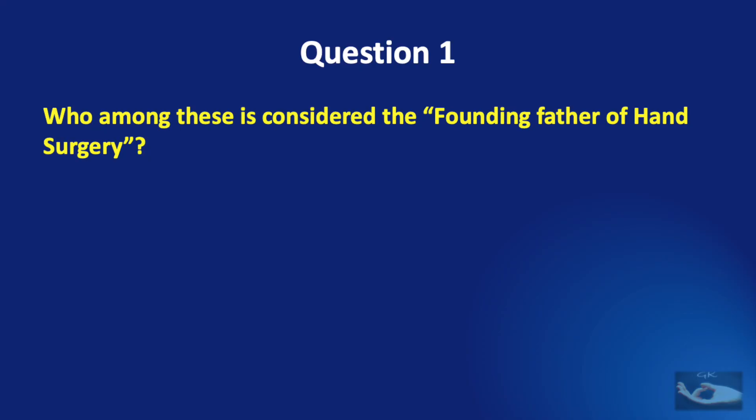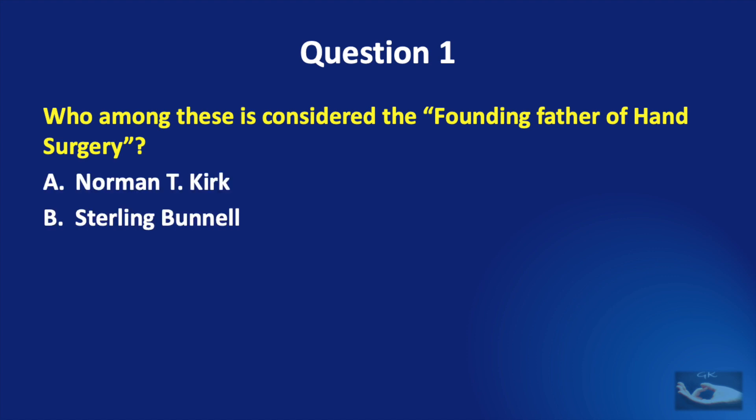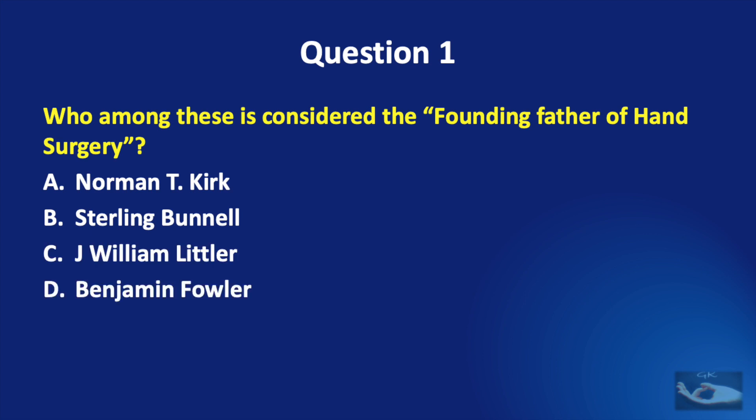The first question: who among these is considered the founding father of hand surgery? Norman T. Kirk, Stirling Bunnell, J. William Littler, or Benjamin Fowler?